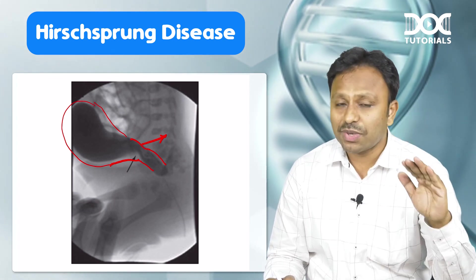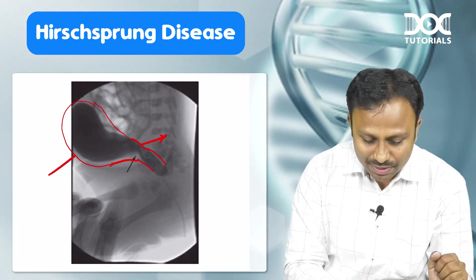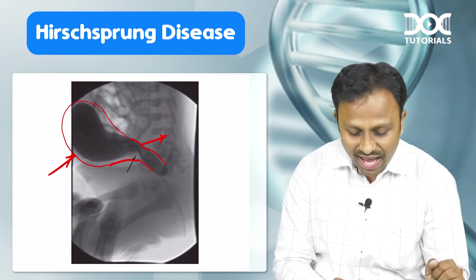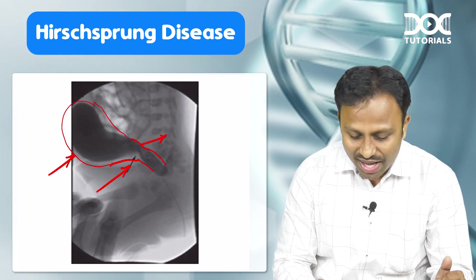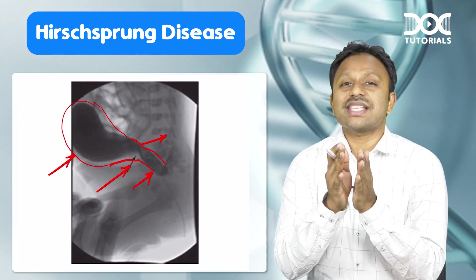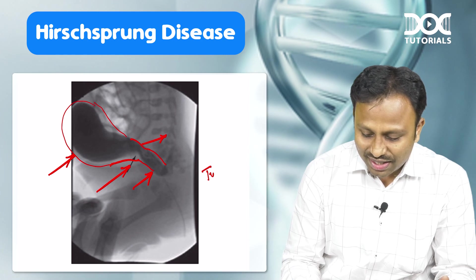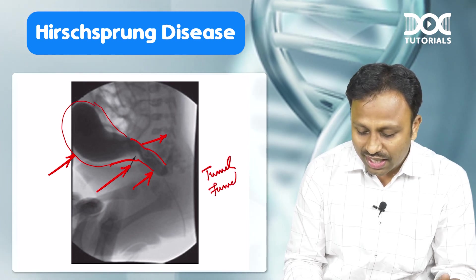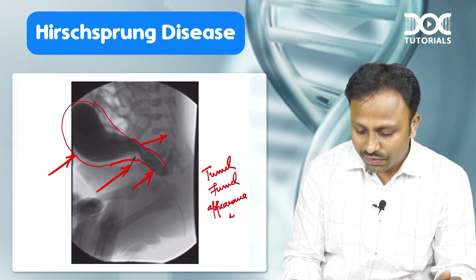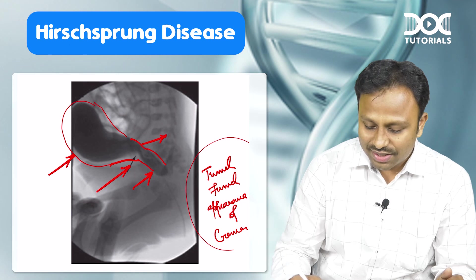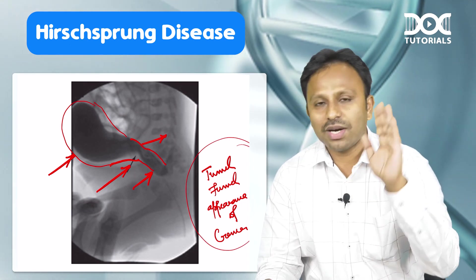To summarize: a proximal dilated segment which is ganglionated, an intermediate zone which is hypoganglionated — also known as the transition zone — and the distal segment which is aganglionated and narrow. This is also known as the tunnel funnel appearance of Cremer — the classical name given to the imaging findings suggestive of Hirschsprung disease.